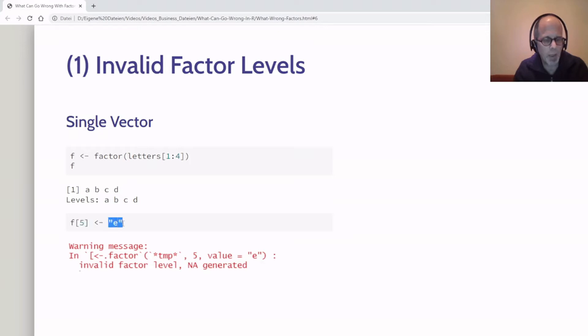I add this E but get the warning 'invalid factor level NA generated.' A warning is not an error, so the code doesn't refuse the operation. We get a fifth element, but it doesn't contain the letter E as we wanted—it contains an NA.